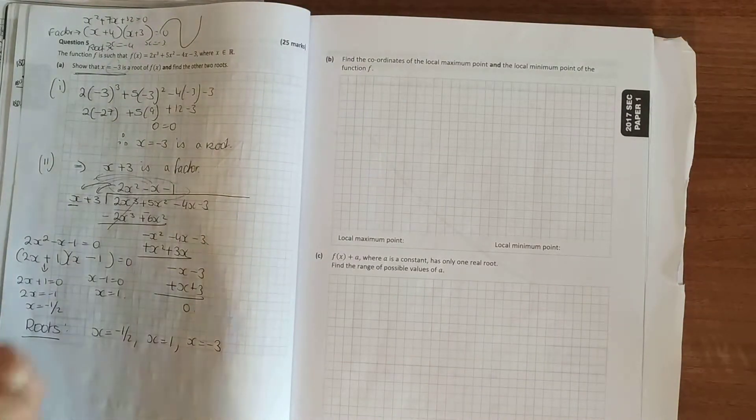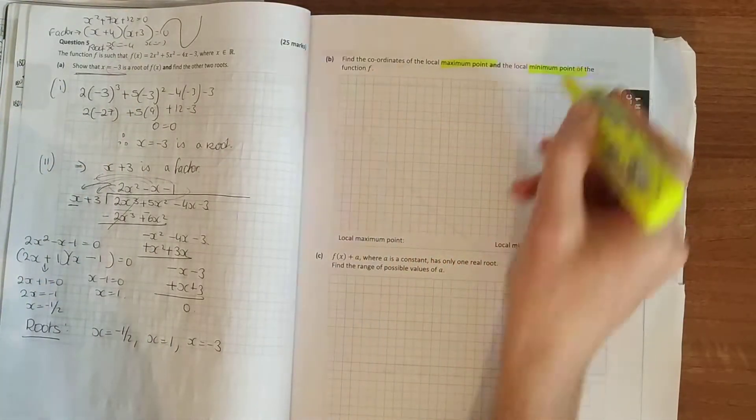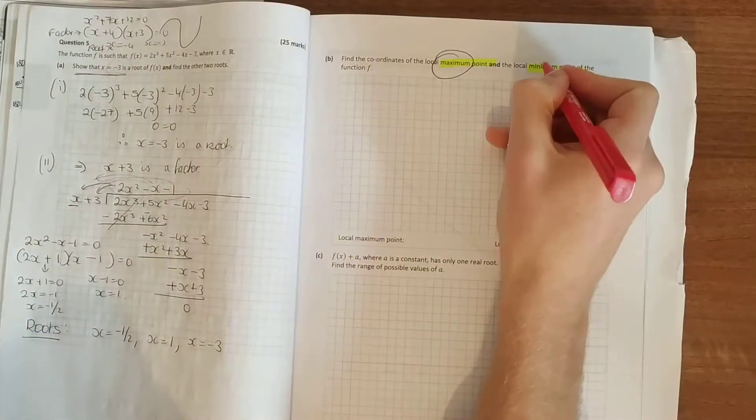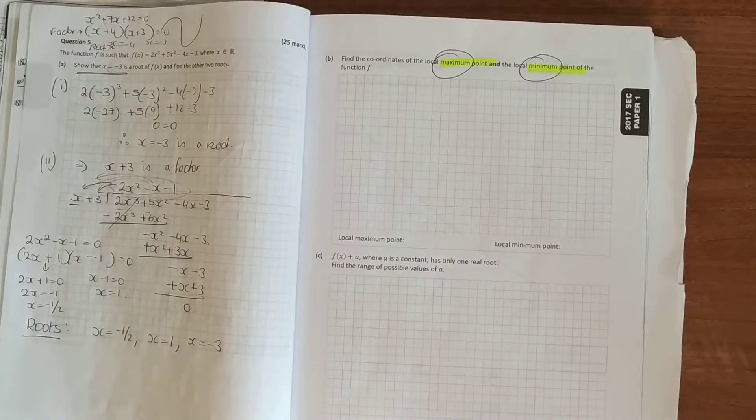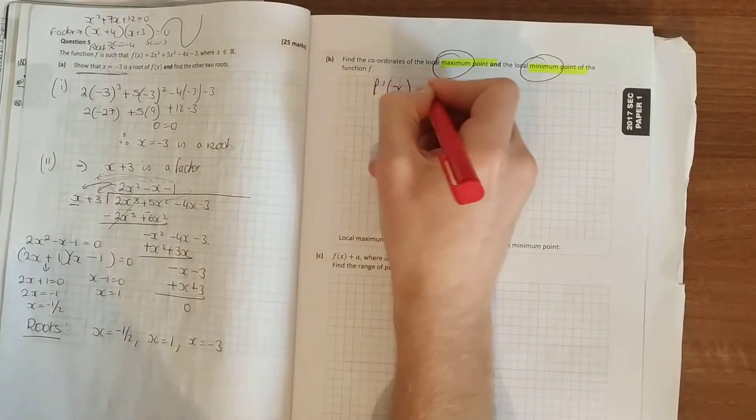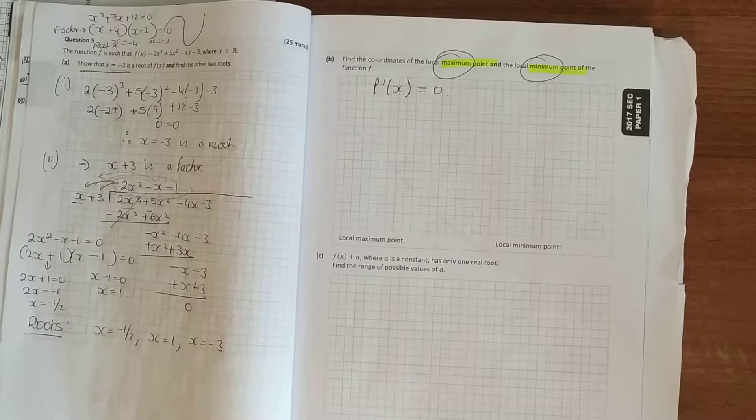And then the next bit of that, find the coordinates of the local maximum point and the local minimum point. Maximum and minimum. Now if it was a quadratic function, you could do a complete square. But it's the easiest way, once you see maximum or minimum or turning points or stationary points, you know you're going to find the derivative. So find your derivative, or dy/dx, let it equal to 0, or f dash x, let it equal to 0.